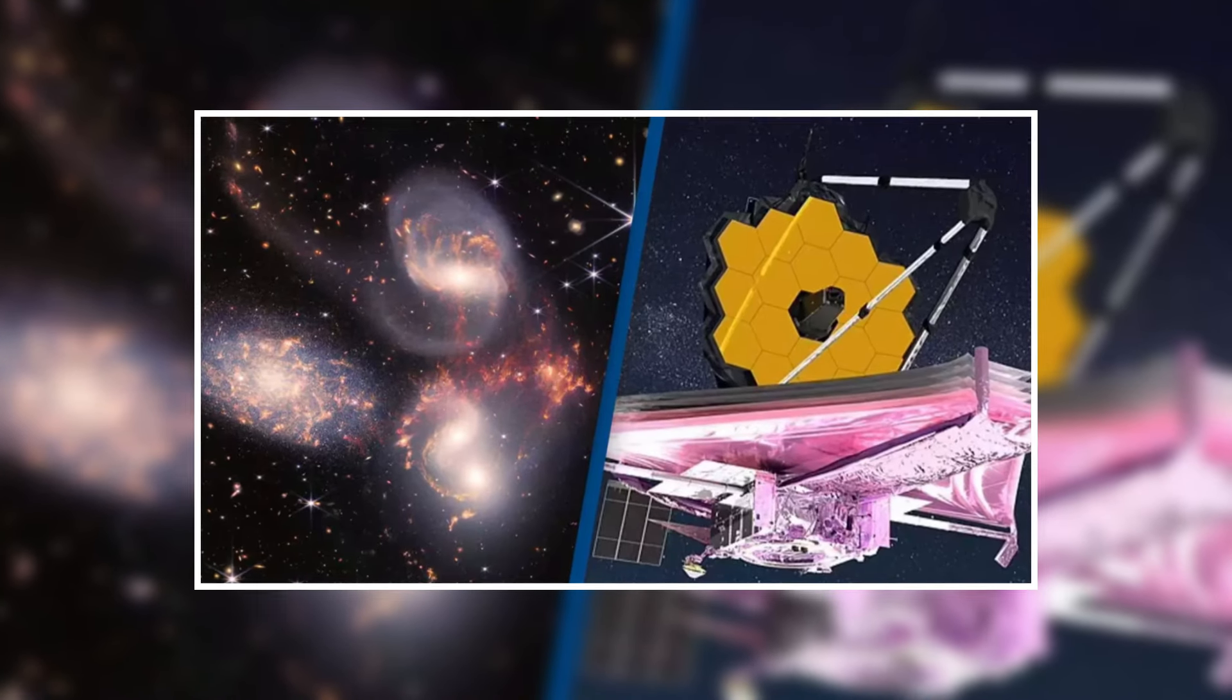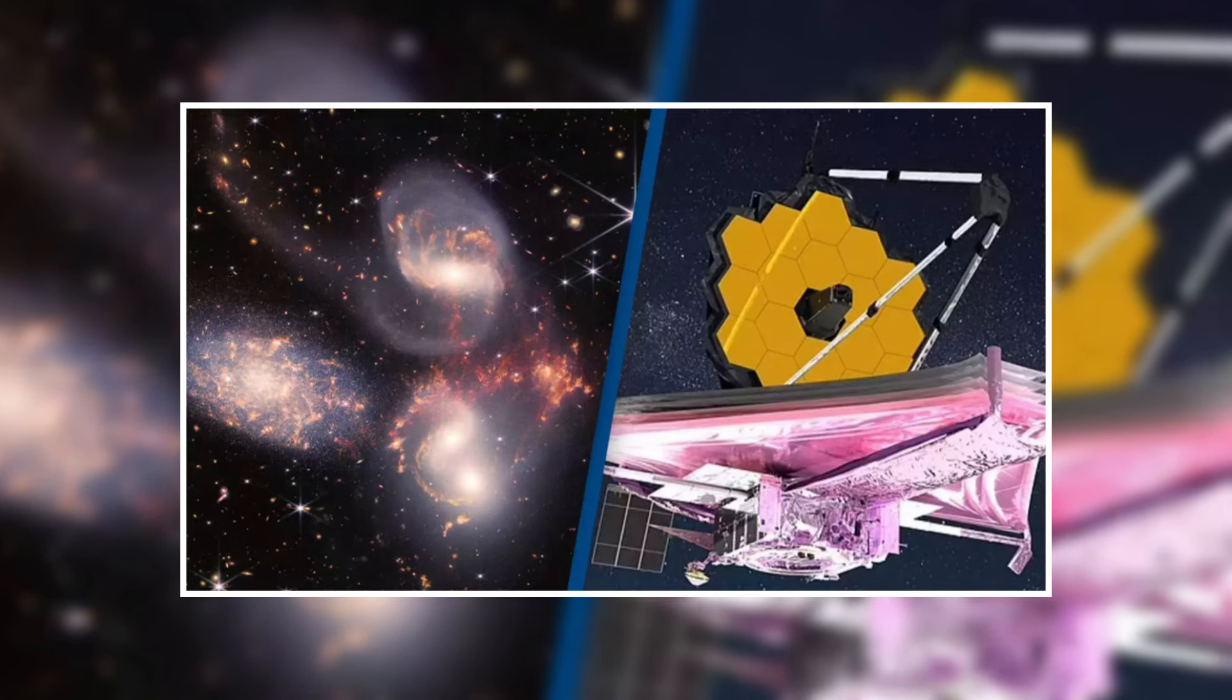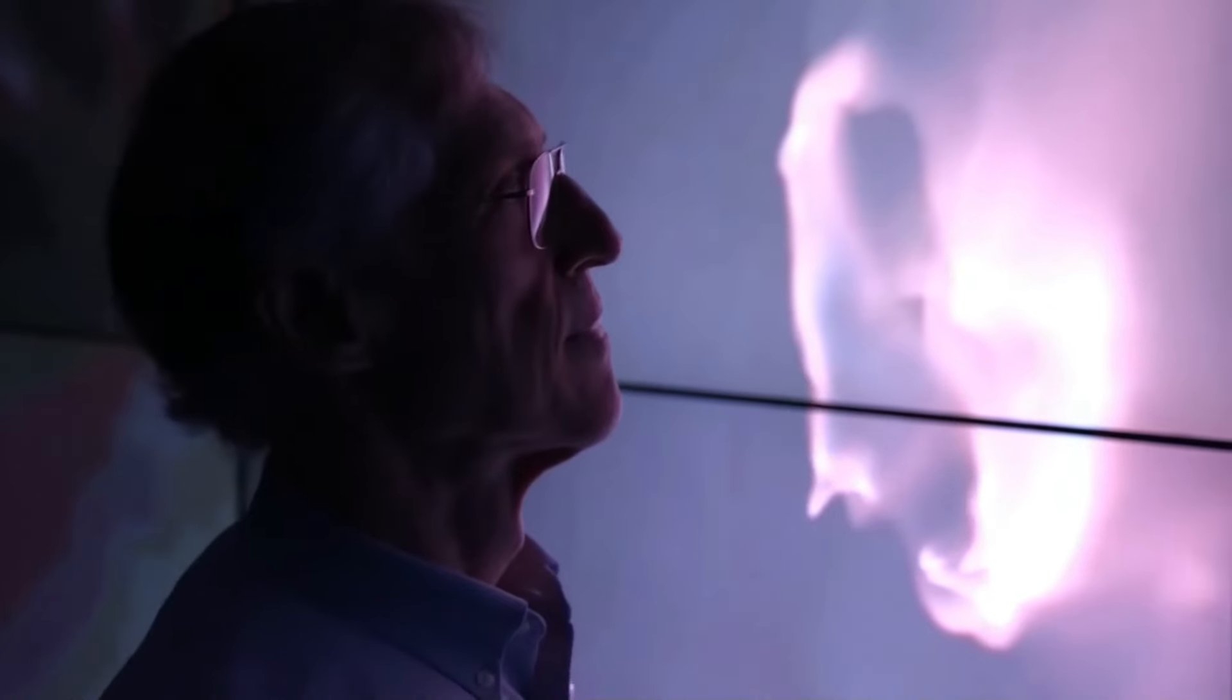Using information gathered by the James Webb Space Telescope, NASA has just identified six enormous galaxies. Because it's possible they may only have to revise the textbooks, scientists are perplexed. We should examine their findings.